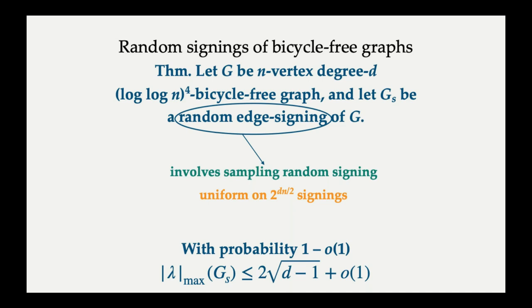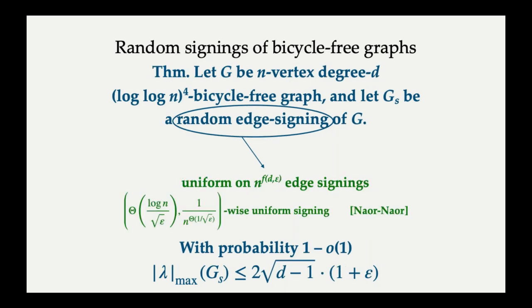But actually, we are able to show something stronger. In particular, this assumption that Gₛ is a random edge signing can be relaxed. So currently, as stated, this random edge signing is being sampled uniformly from the space of all signings—every edge, you're independently flipping a coin. If it's heads, you're putting a plus; if it's tails, you're putting a minus. But really, you don't need to do that. It suffices for the random signs to be pseudorandom. So I won't discuss specifically what pseudorandom means in this context, but the important thing to note is that this pseudorandom string can actually be produced from a seed of O(log n) bits.